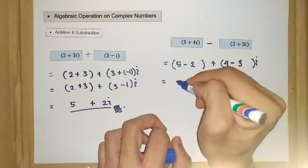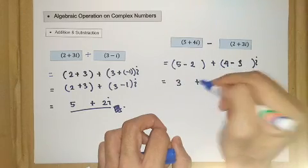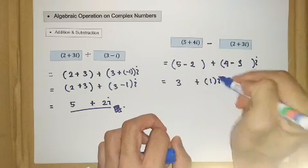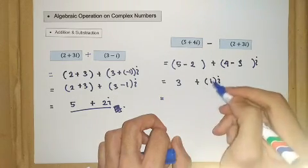This one, 5 minus 2 is 3 plus with positive 1, so we have 1i and 1 times i is i, so 3 plus i. So this is the answer for this example.